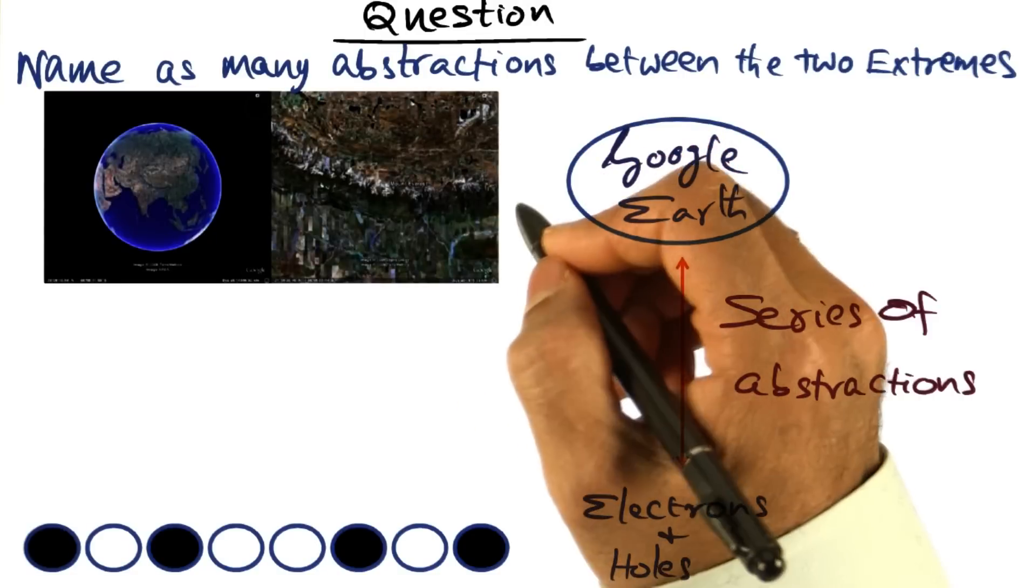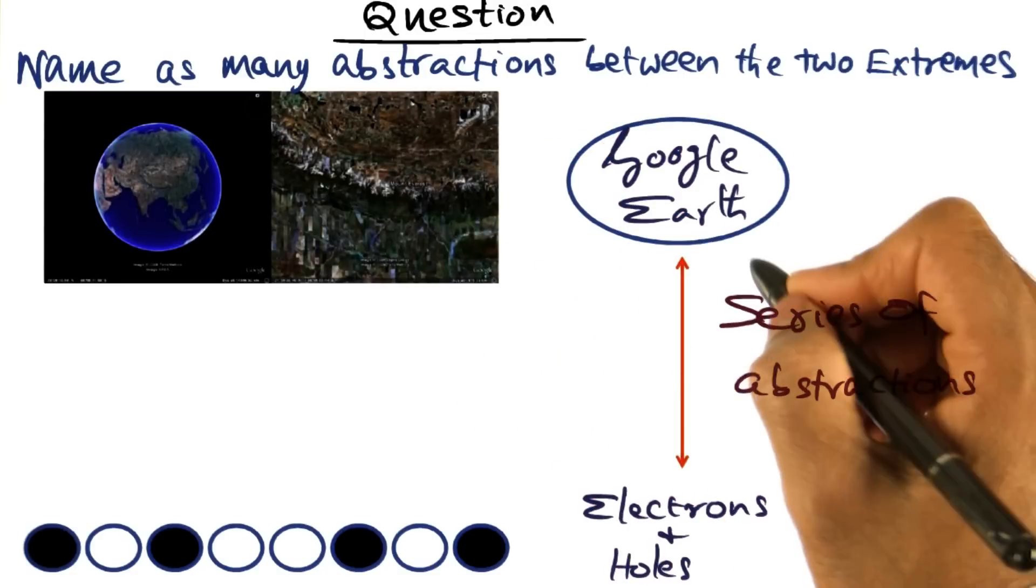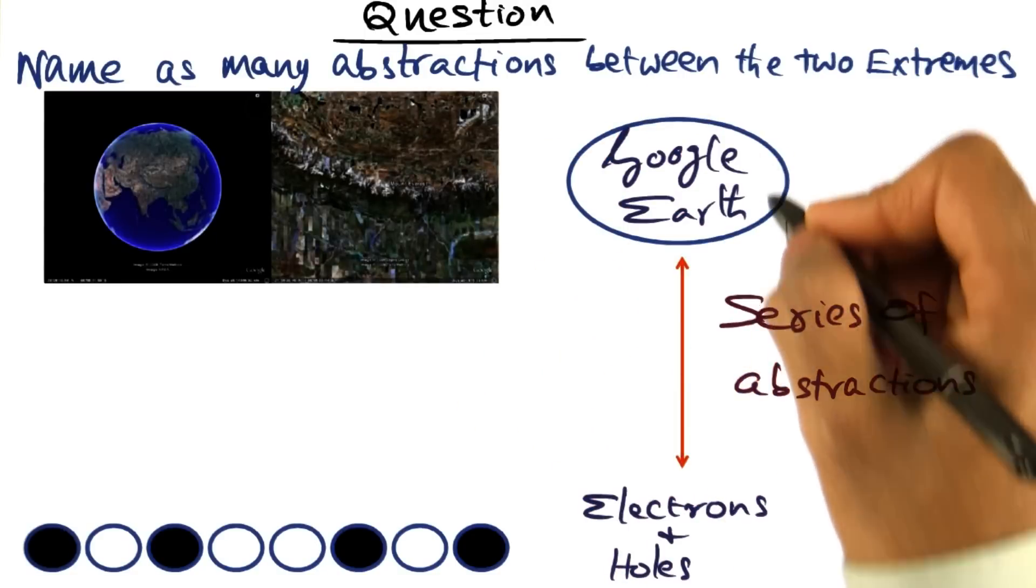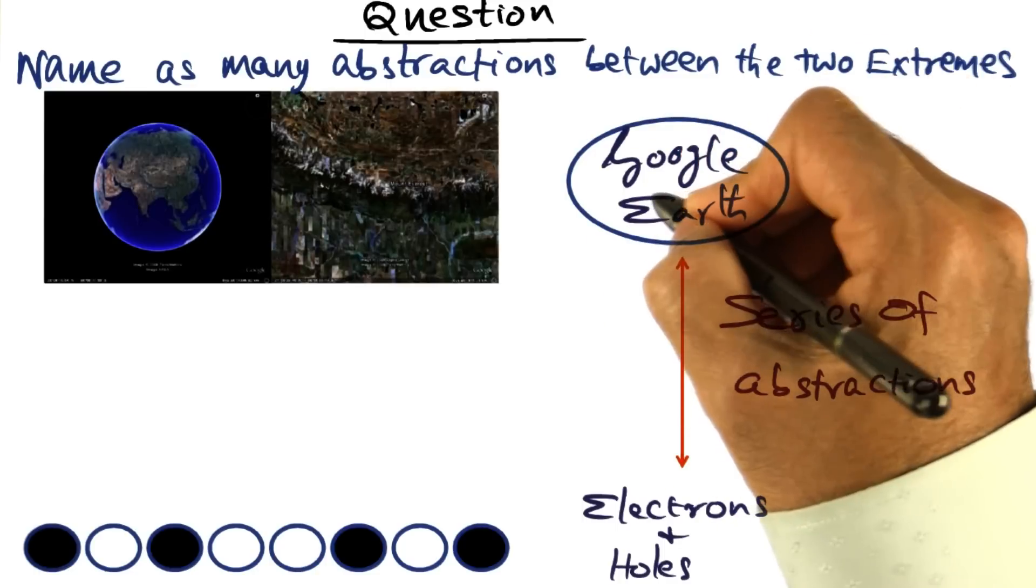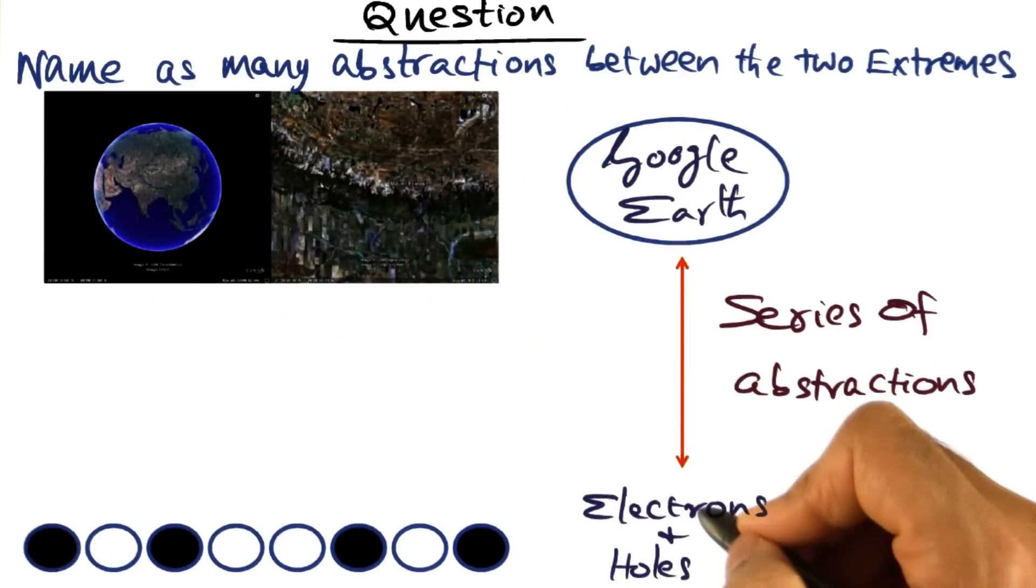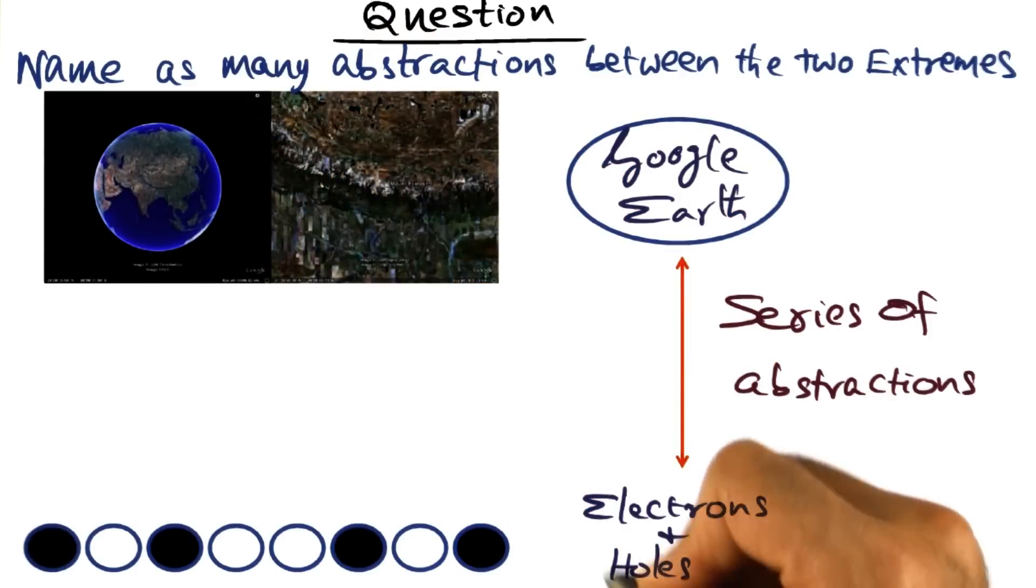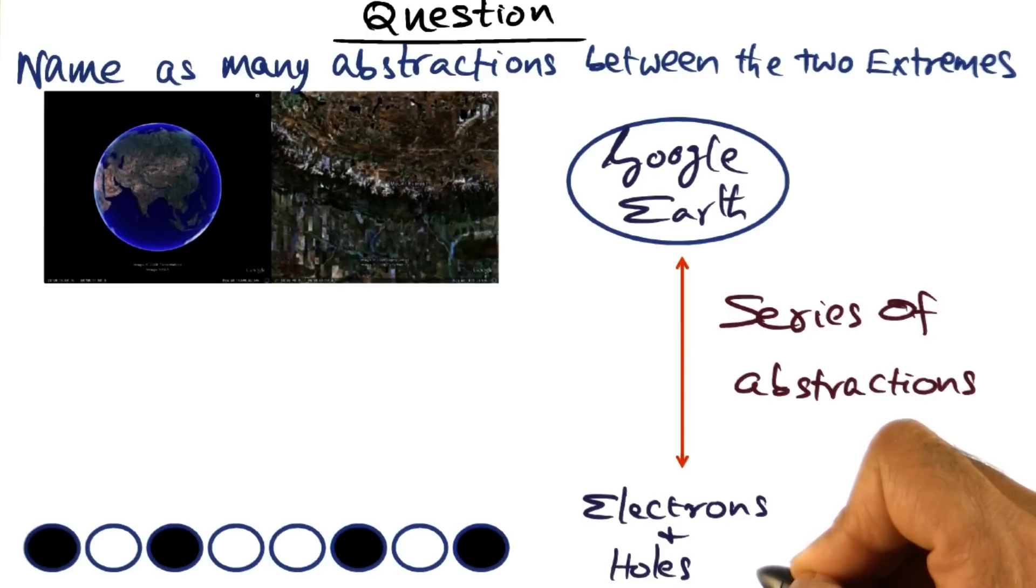Now I want you to help me think about all the abstractions that sit between these two extremes. Google Earth application that makes magic happen on the screen, and the solid state physics, the electrons and holes enshrined in your computer system.